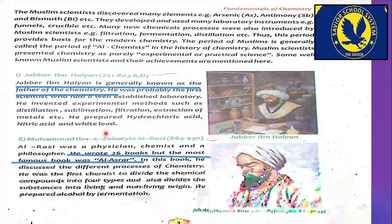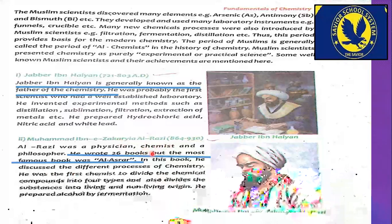Moving on — Muhammad ibn Zakariya Al-Razi, 864 to 930 AD. Al-Razi was a physician, chemist, and philosopher. He wrote 26 books throughout his life. Writing even one book requires years of hard work, so 26 books reflects enormous dedication. His most famous book was Al-Asrar.